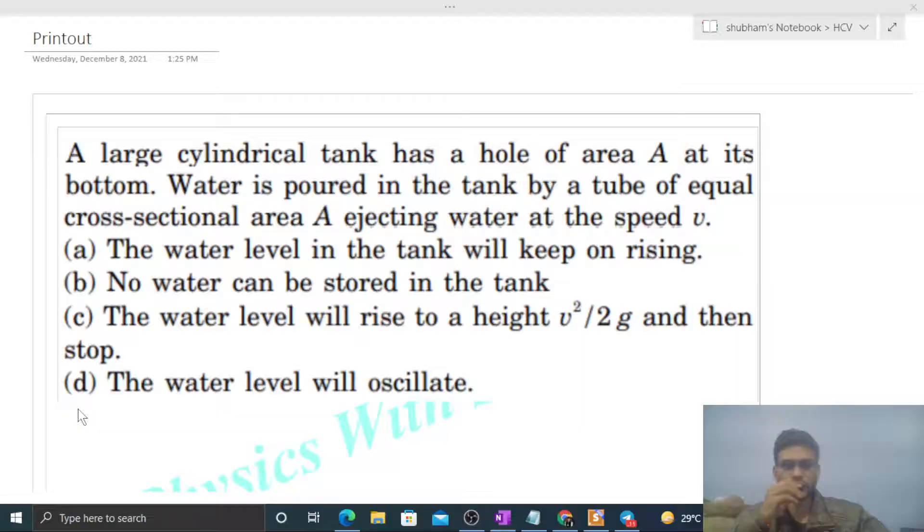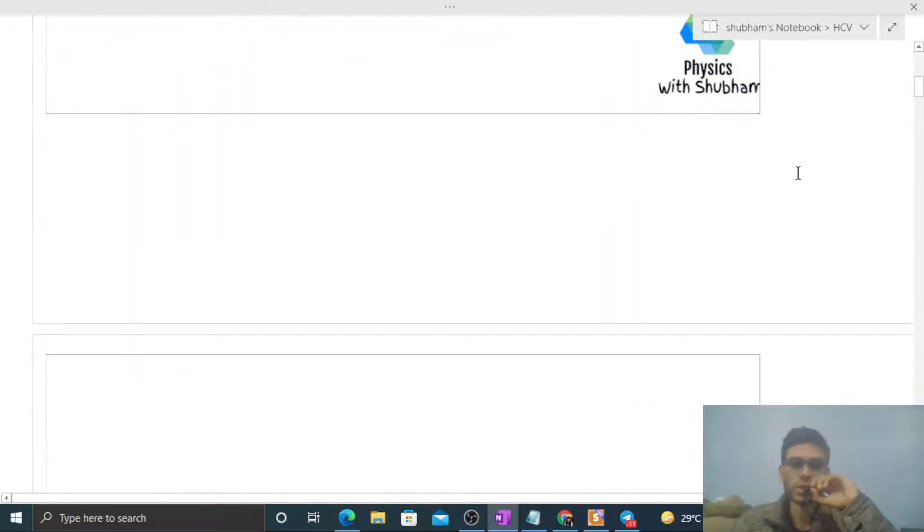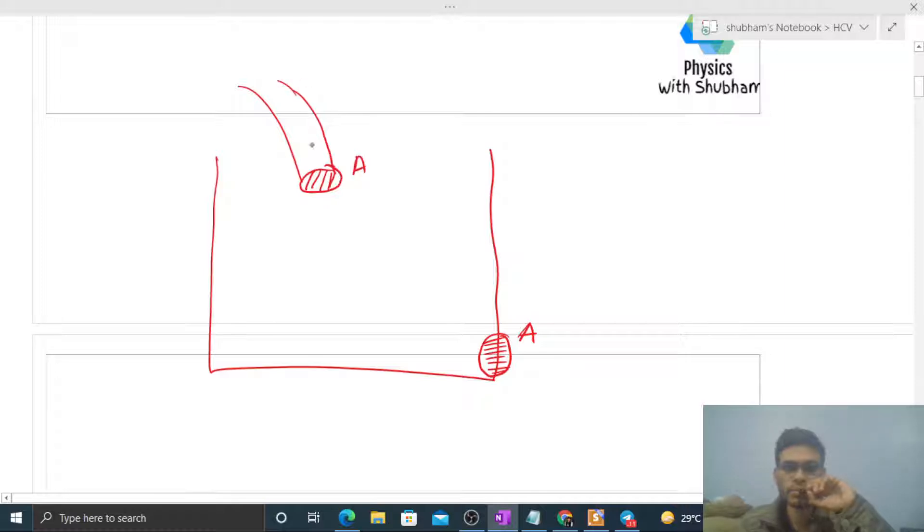Okay, hi everyone. Today let's discuss one interesting problem. It says a large cylindrical tank has a hole of area capital A at its bottom. Water is poured in the tank by a tube of equal cross-sectional area capital A, ejecting water at speed v. So in the question we have a large cylindrical tank, and in this tank bottom we have a hole. This hole cross-sectional area is capital A, and a tube with cross-sectional area also capital A fills this tank. The tube supplies water at speed v.